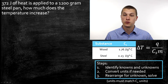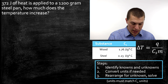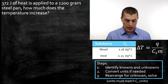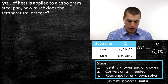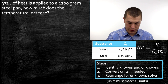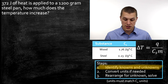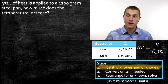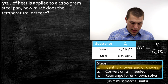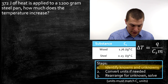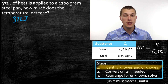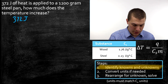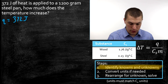Let's do the most basic problem: calculating the change in temperature. The problem says 372 joules of heat is applied to a 1200-gram steel pan — how much does the temperature increase? I've broken the process into three steps. The first step is to identify what we know and what we want to find. Right away we're told we have 372 joules of heat, which we symbolize as Q. So Q equals 372 joules. It's applied to a 1200-gram pan, so our mass is 1200 grams.